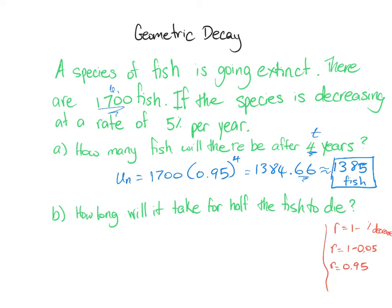Now, how long will it take for half the fish to die? We need to first figure out what number is half the fish. We started from 1700, and half of 1700 is 850. So we want our final amount UN to equal 850. We know our starting number u1 = 1700, our r = 0.95, and we don't know the time — that's what we're trying to find out.